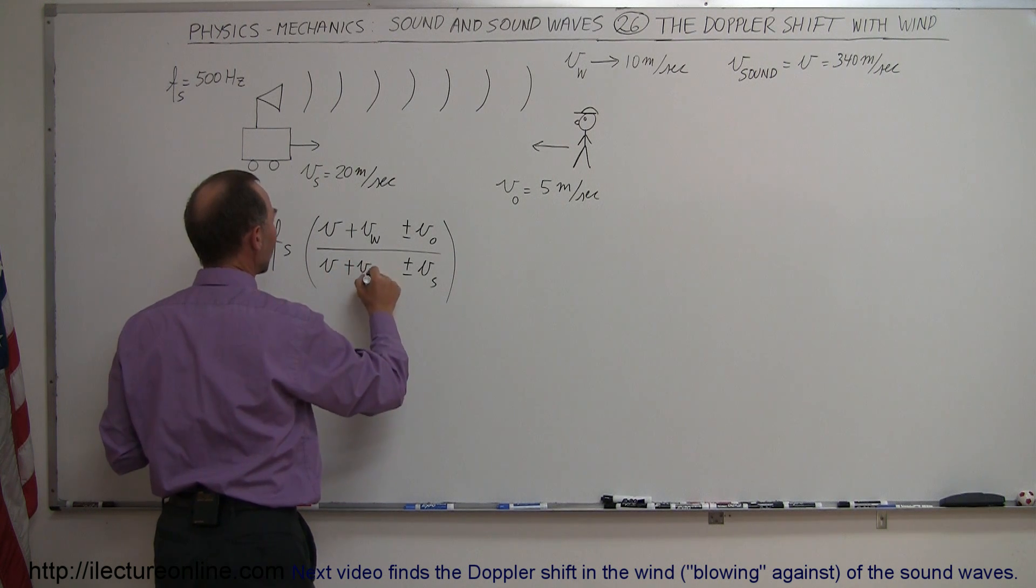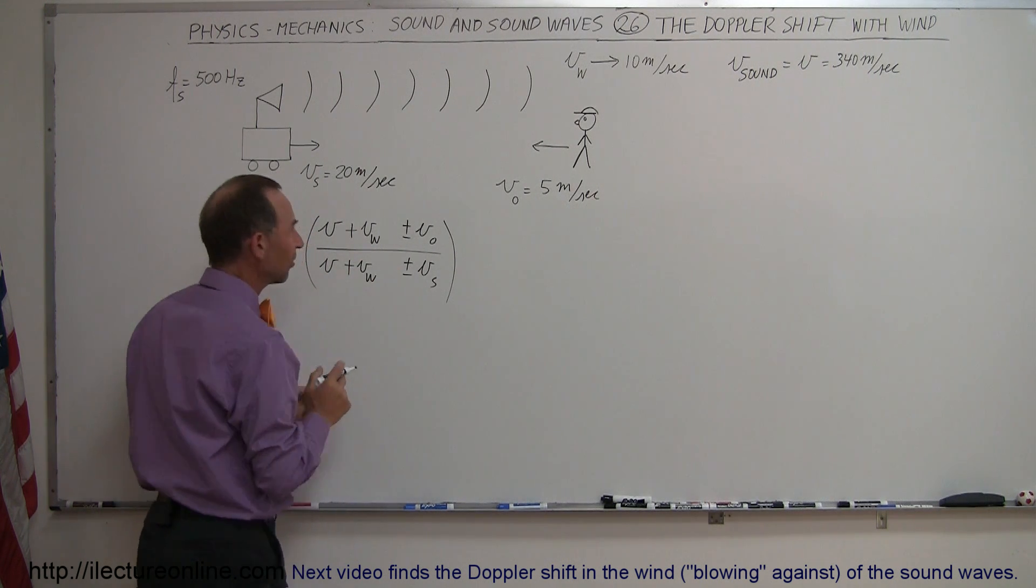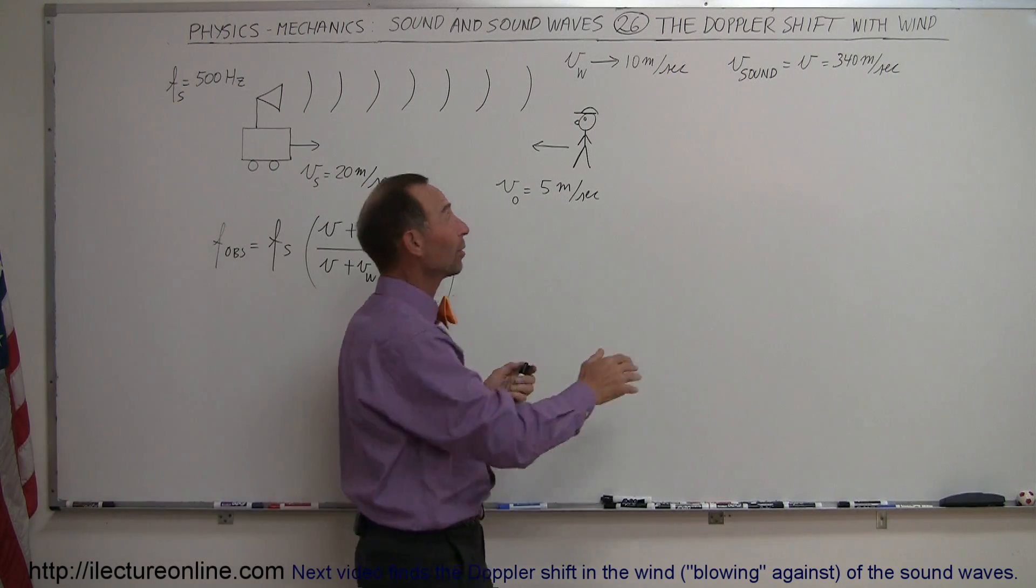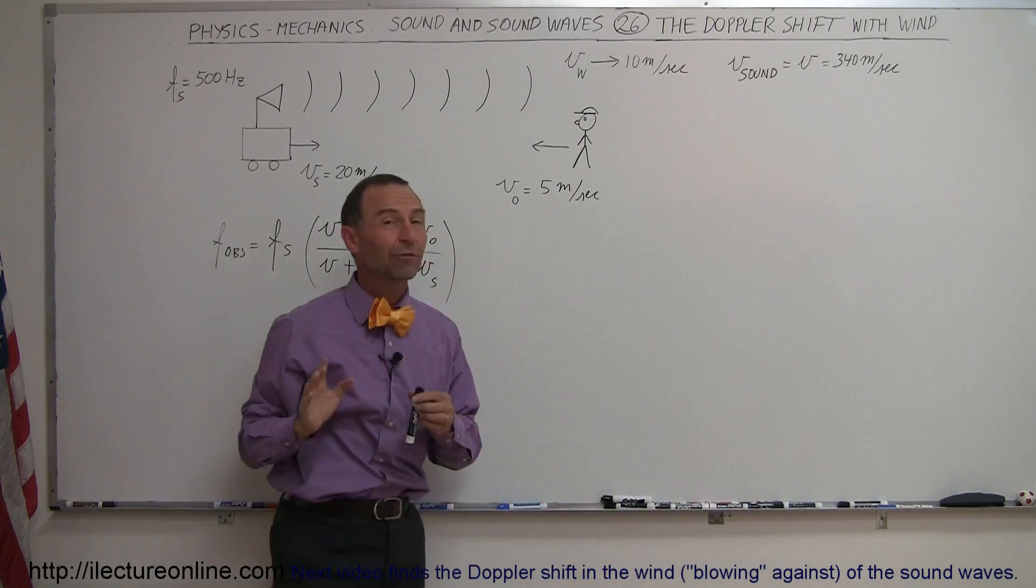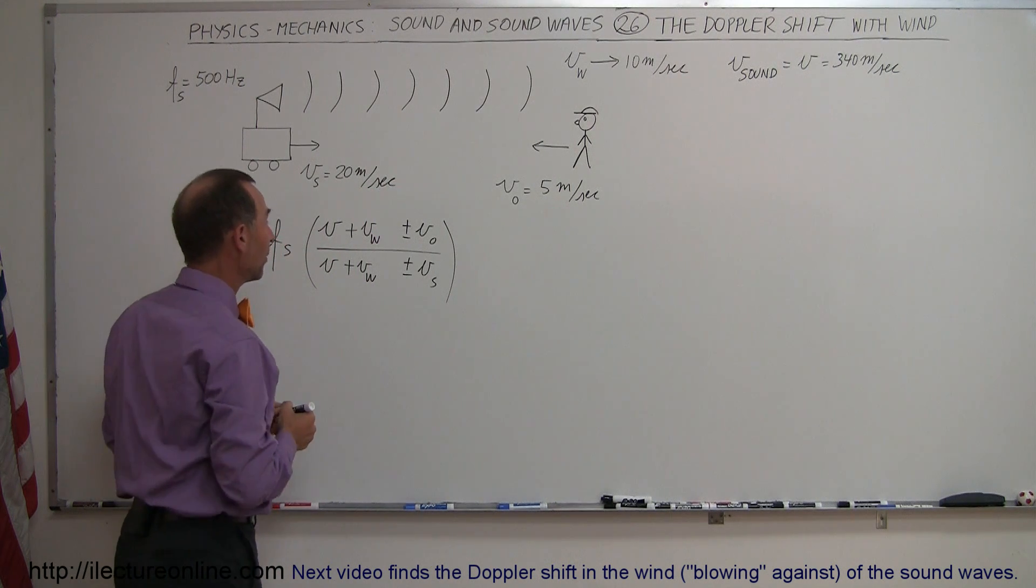And so we have to add the velocity of the wind in this direction, and add the velocity of the wind down here. So in essence, instead of having a sound velocity of 340 meters per second, you'll now have an effective sound velocity of 350 meters per second.